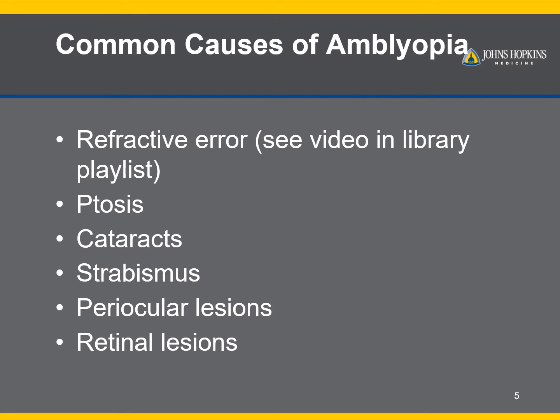Essentially anything that blocks the line of sight and affects central vision can cause amblyopia. Some common causes include refractive error, ptosis, cataracts, strabismus, and periocular or retinal lesions. We will go over each of the different types now.